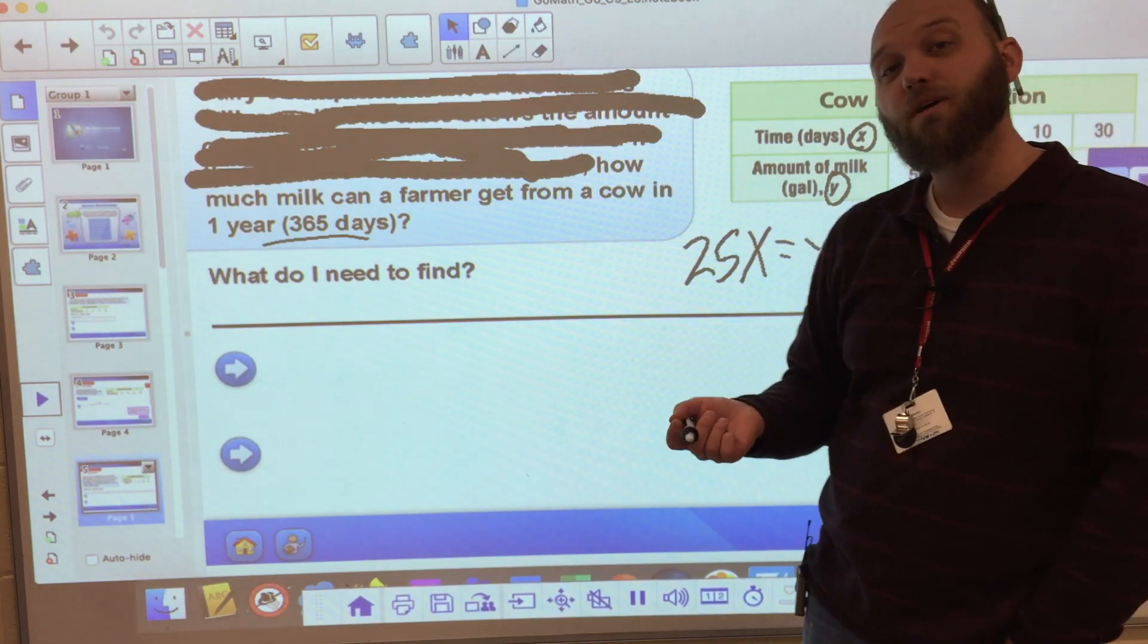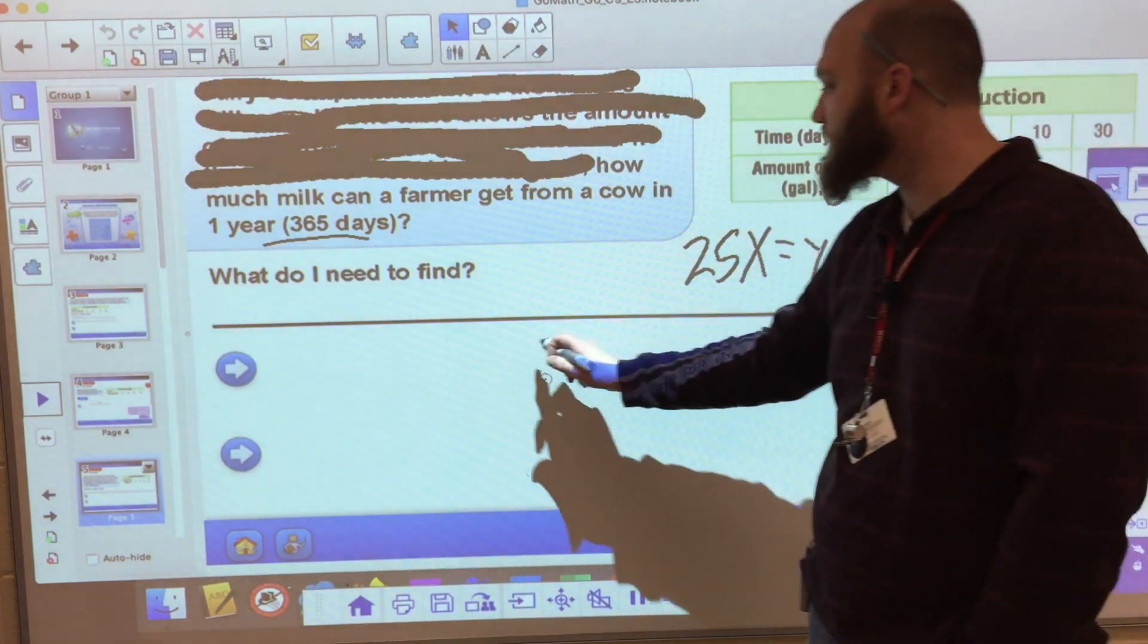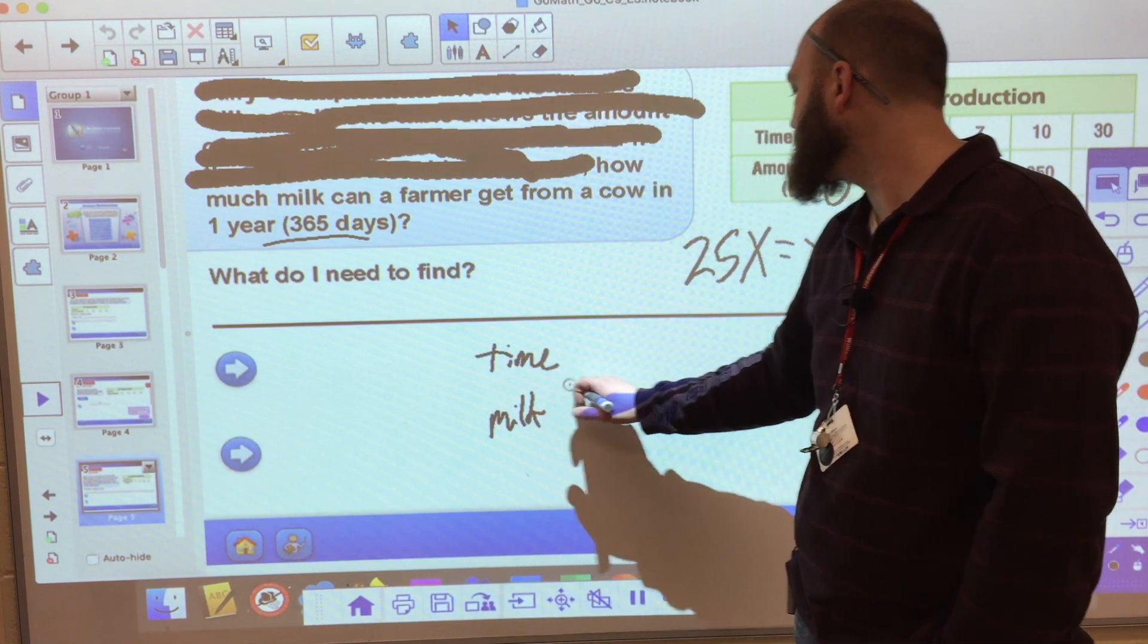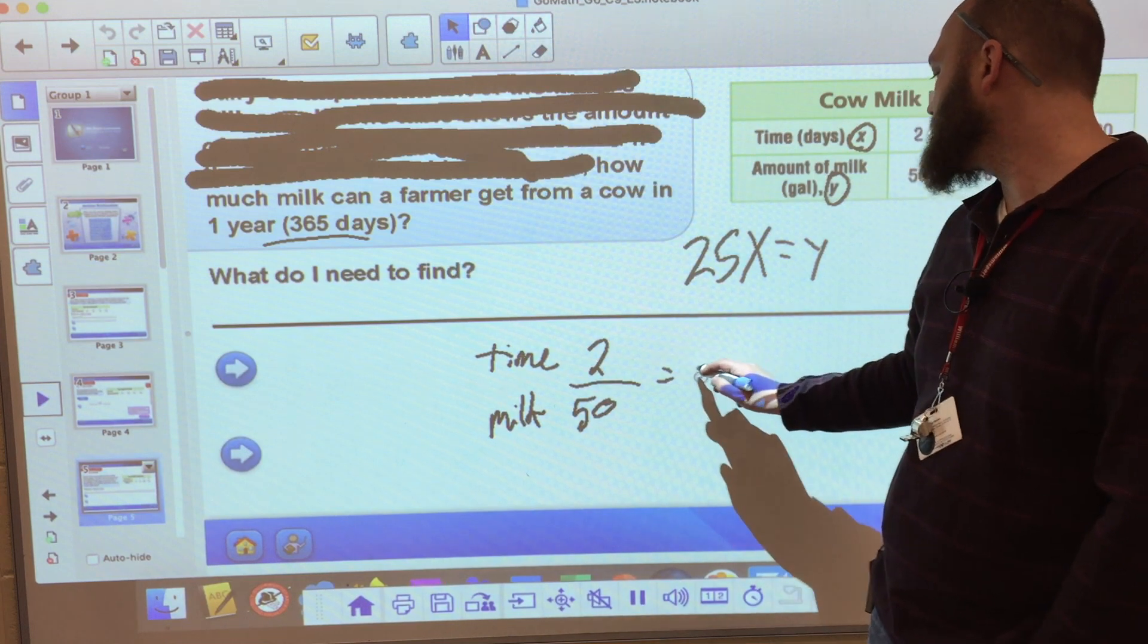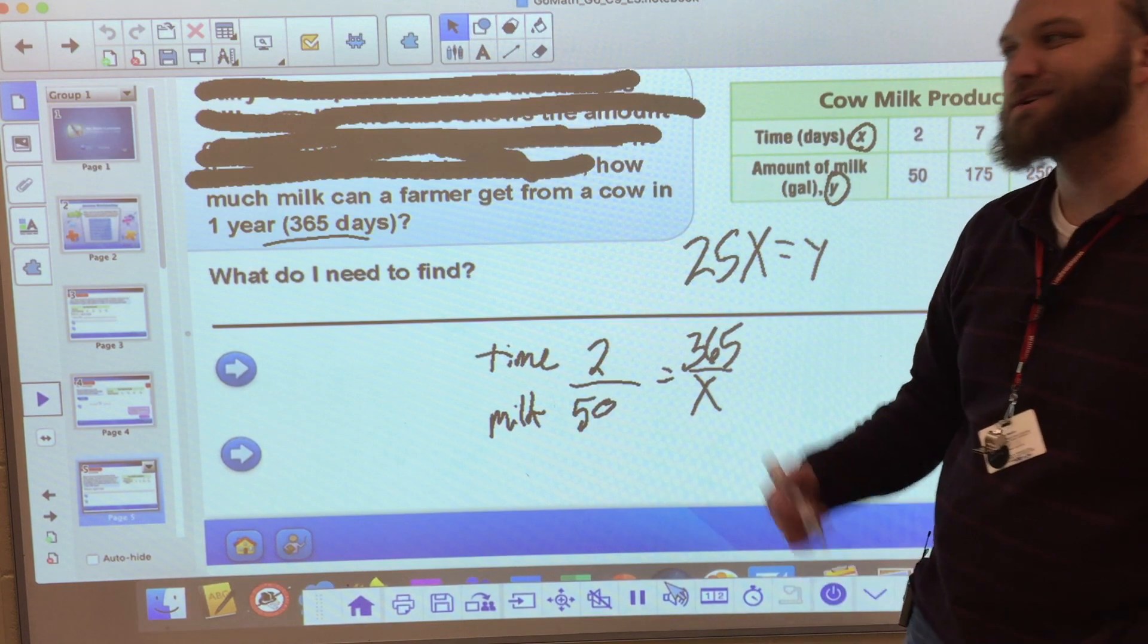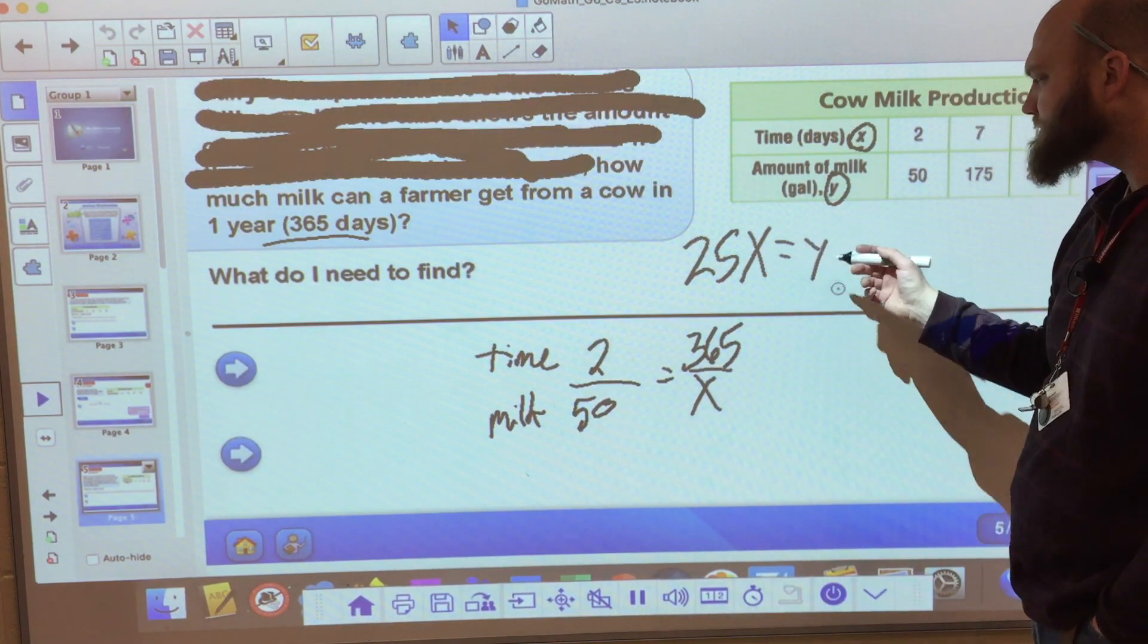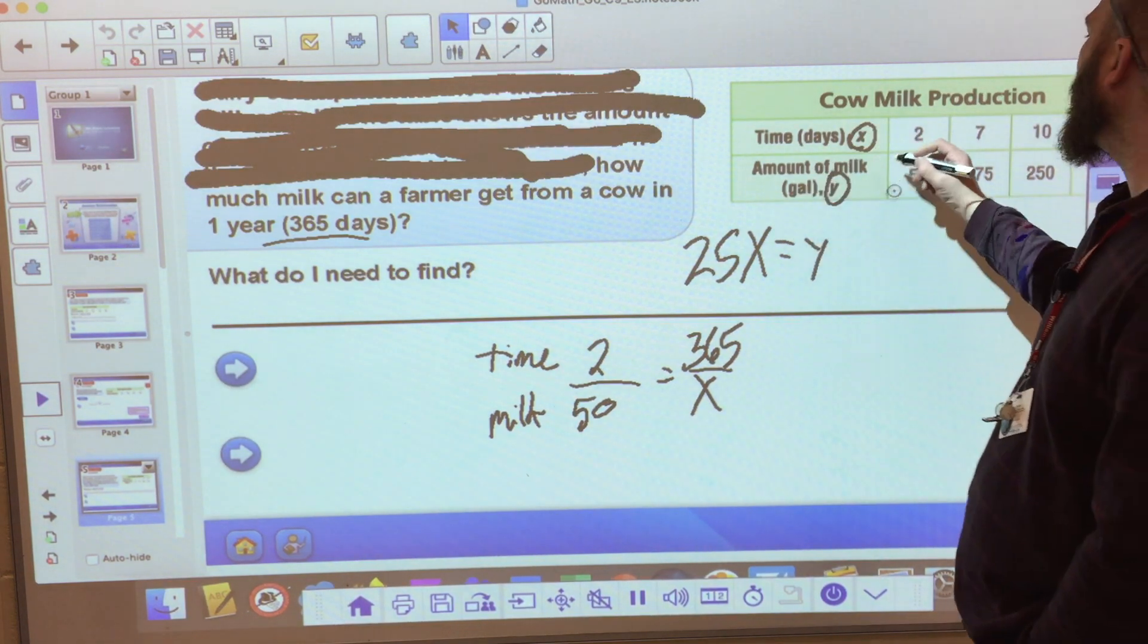I could set it up as a ratio and solve it. So 2 over 50, which would get me to 1 over 25. So I could say time and milk in gallons. That's 2 to 50, and they want to know in 365 days, and I need to solve for x. So what I know now is that 25 times x equals y, and I know what x is. x is going to be my days of 365.